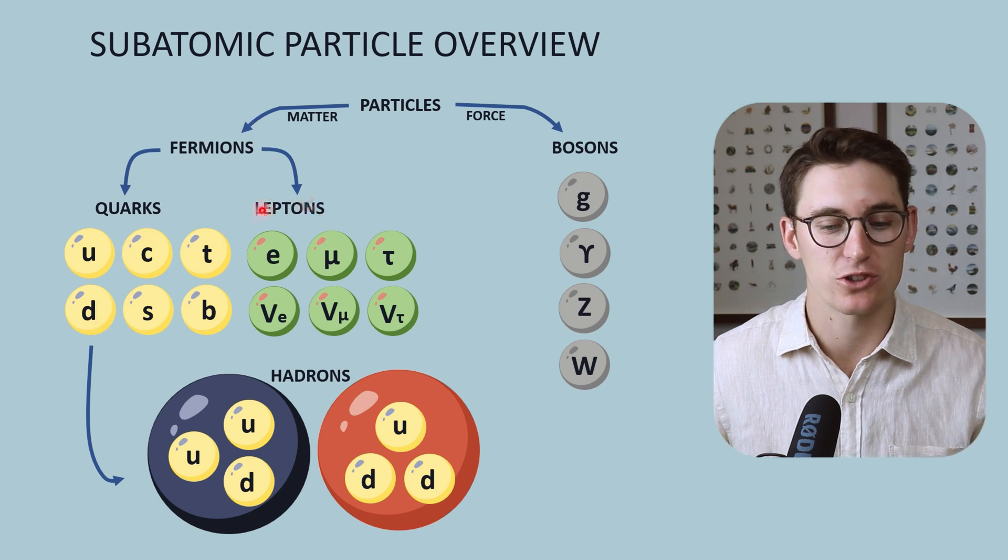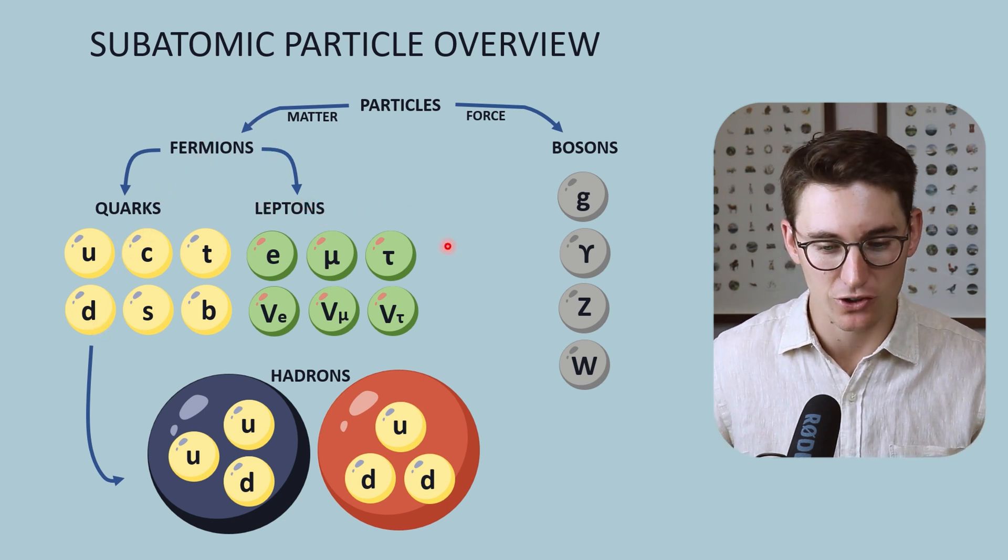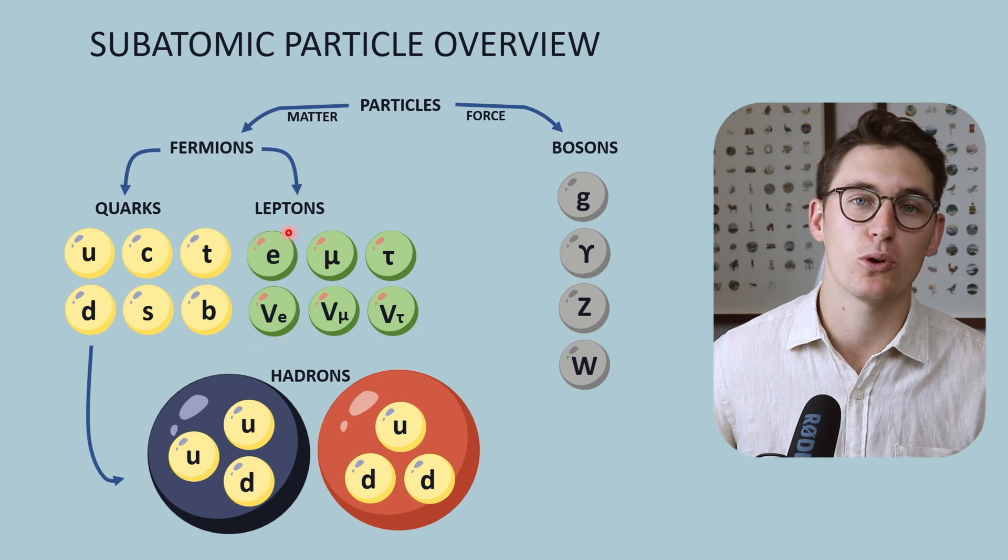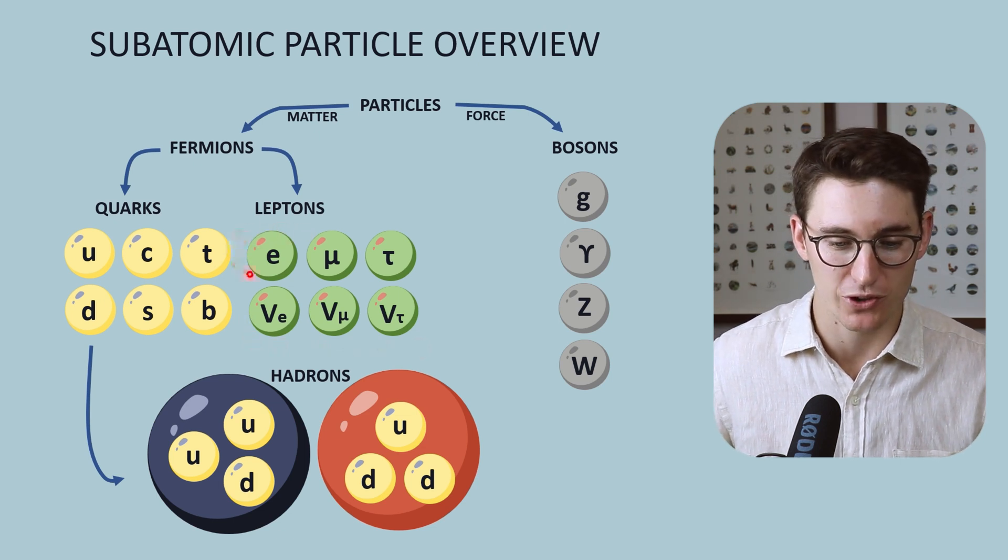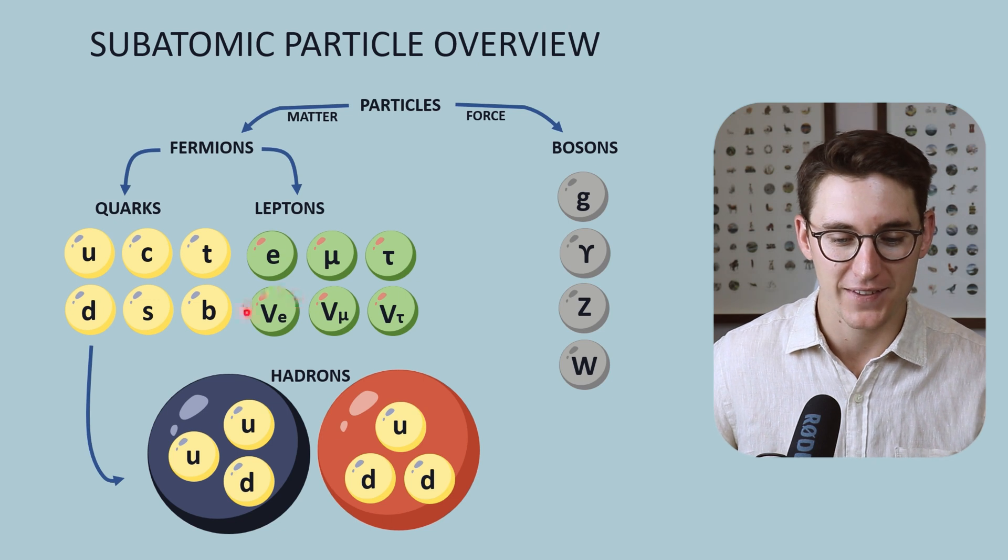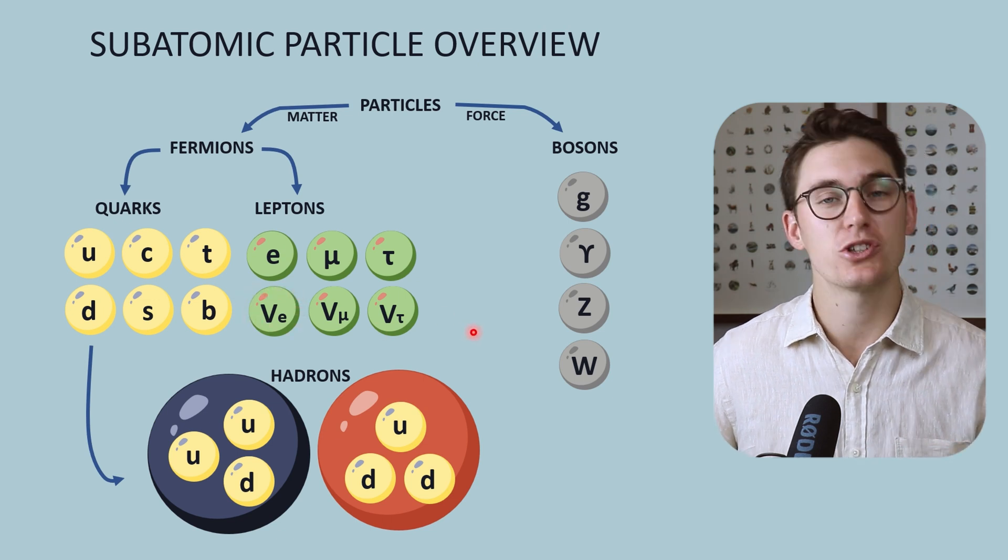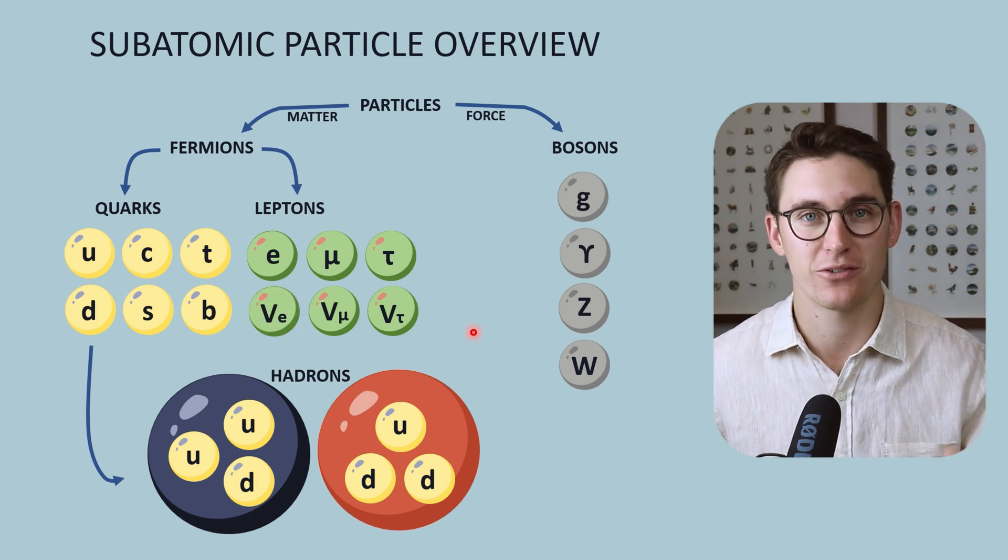Fermions can also be divided into leptons. These are not, for the most part, important for our course, but I want to draw your attention to the electron, which we've seen before, and the electron neutrino. Those will come up especially in our nuclear physics module.